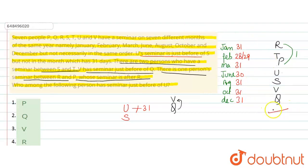To yeh ho gaya aapke pas final arrangement. Now the question is, who among the following person has seminar just before you? So U se turant pehle kiska seminar hai? So U se turant pehle P ka seminar hai. To P aapka option number 1 hai. So option number 1, P is the correct answer. Thank you.